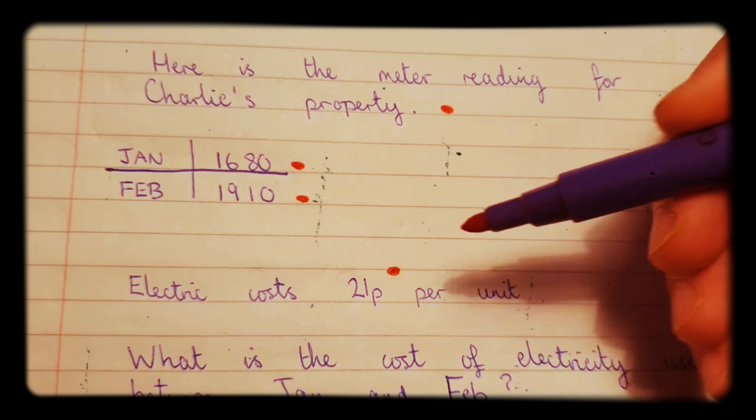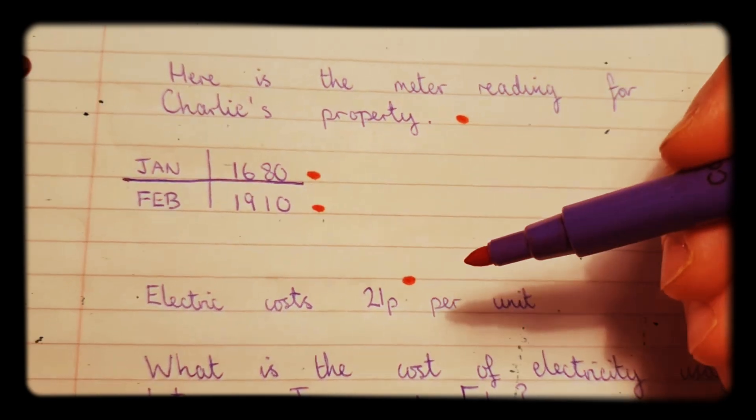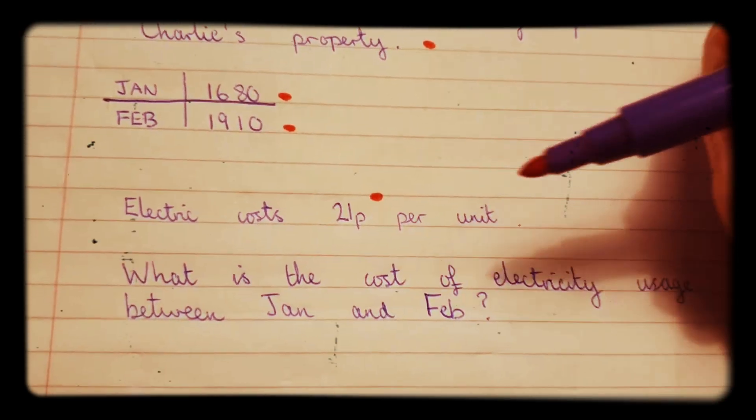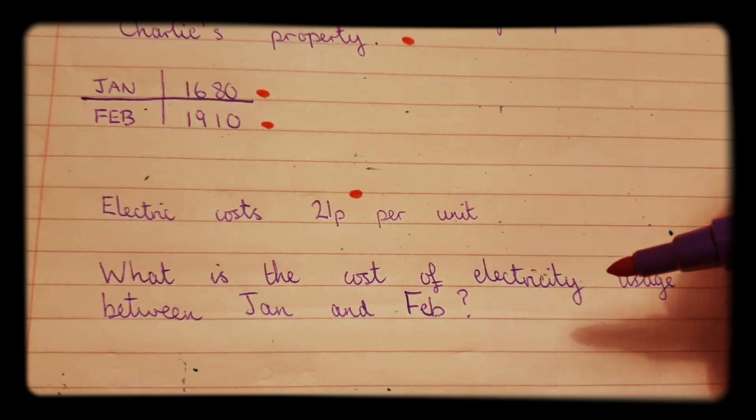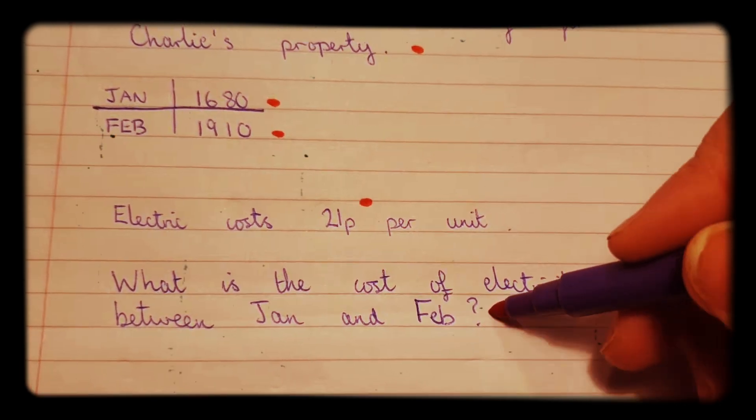Electric costs 21p per unit. We're saying that this is an electric meter. What is the cost of electricity usage between January and February?